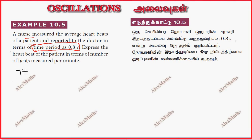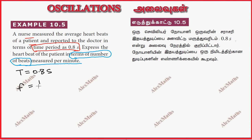So if you have a nurse, t is equal to 0.8 seconds. Express the heartbeat of the patient in terms of the number of beats measured per minute. This is the number of beats measured by frequency. The formula is f is equal to 1 divided by t.